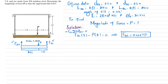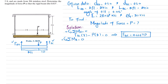For F_AD, we take the sum of all moments about point B equals zero, taking counterclockwise as positive. F_AD produces counterclockwise rotation with perpendicular distance 3 feet, and P produces clockwise rotation at distance 1 foot. So: F_AD × 3 − P × 1 = 0, giving F_AD = 0.333P.